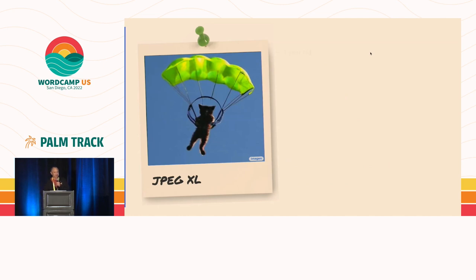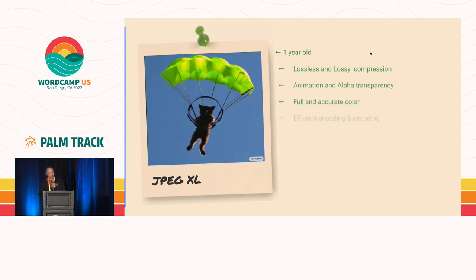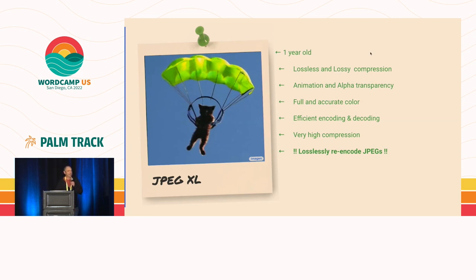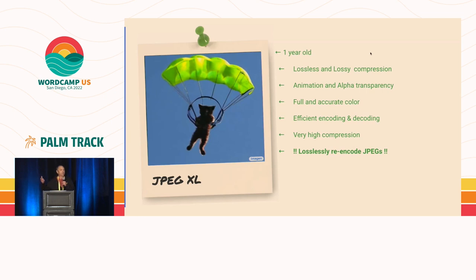Finally, JPEG XL — brand new, about one year old. It has everything: lossless and lossy, animation and alpha, full and accurate color, efficient encoding and decoding, and very high compression just like AVIF. It also has new amazing features, including losslessly re-encoding JPEGs — JPEG XL can take an old lossy JPEG, apply its more efficient compression algorithm without losing any information, and save it back to file. However, this isn't that useful for WordPress, because WordPress always keeps your original file around when you upload it, so we can always go back to the original source when creating compressed versions.